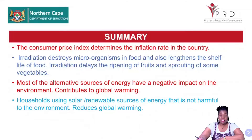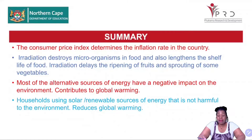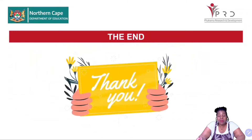Summary: the consumer price index determines the inflation rate in the country. Irradiation destroys microorganisms in food and lengthens the shelf life; it also delays the ripening of fruits and sprouting of some vegetables. Most alternative sources of energy have a negative impact on the environment and contribute to global warming, but households using solar or renewable sources of energy reduce global warming. We have come to the end of our lesson — thank you for watching. I'll see you in the next lesson. Bye.